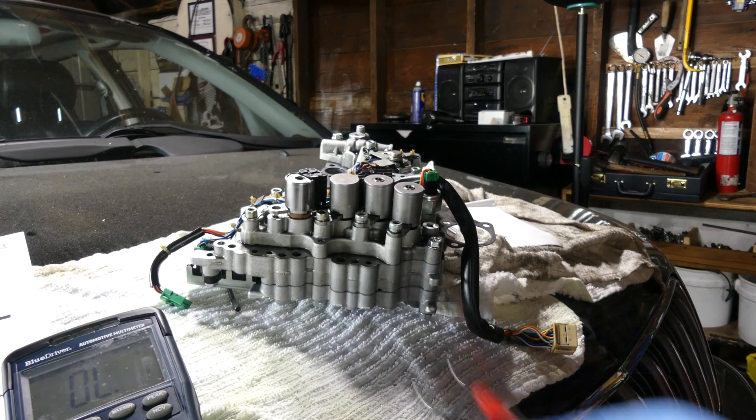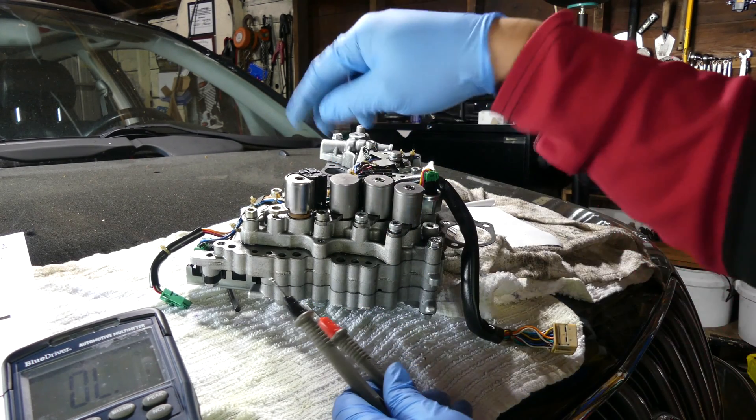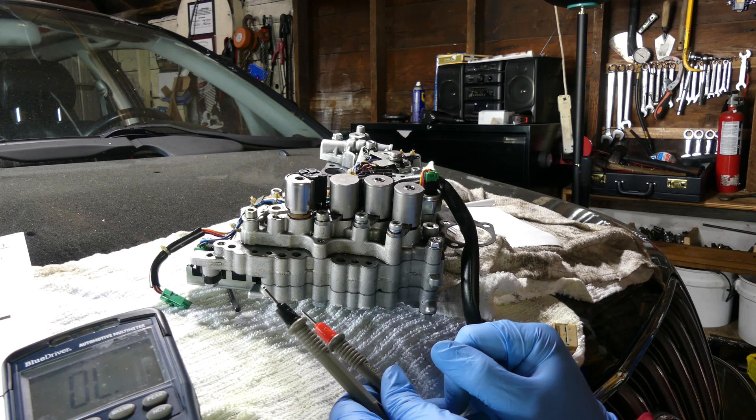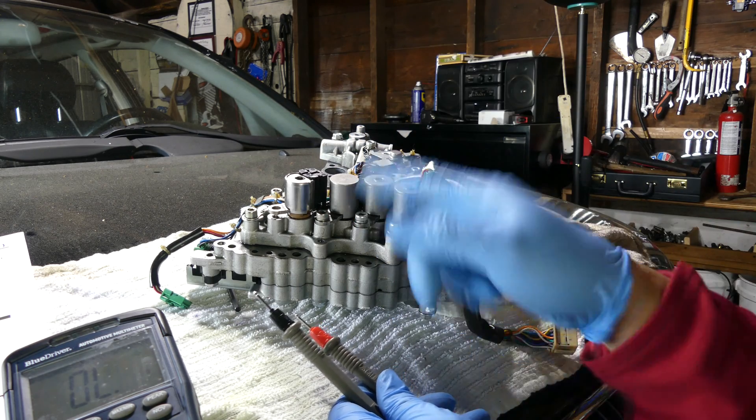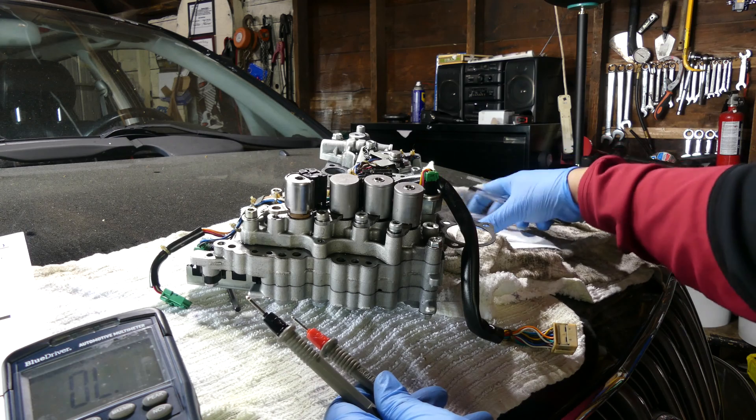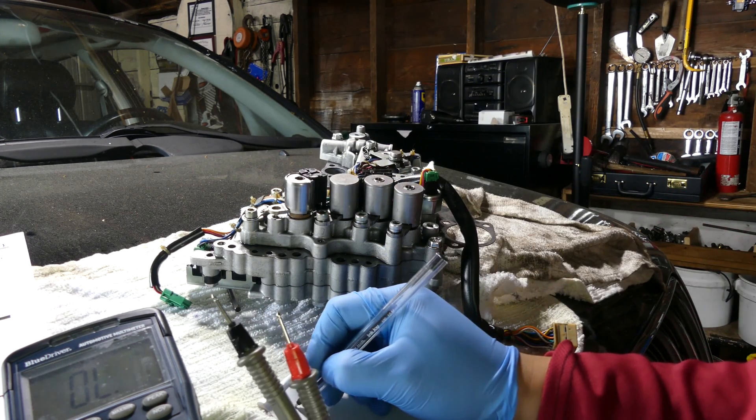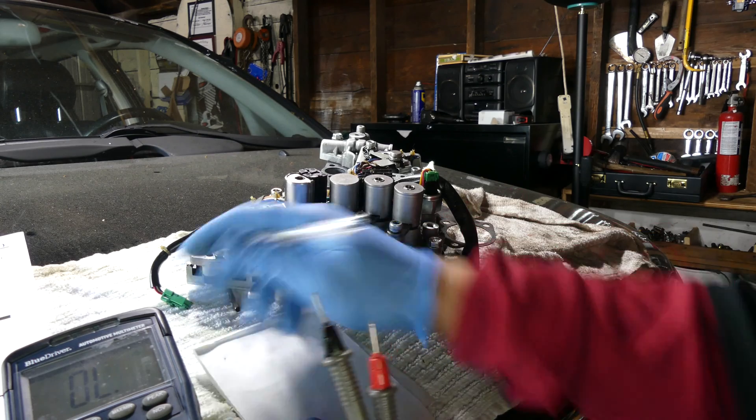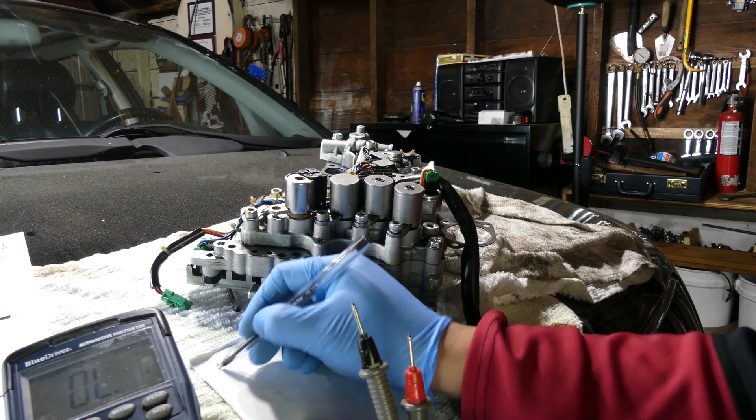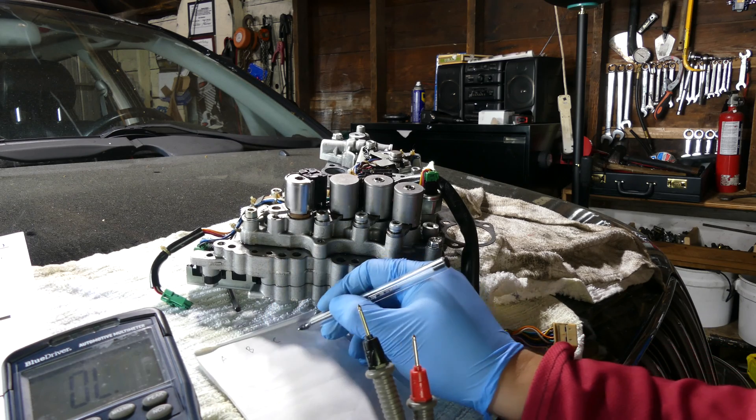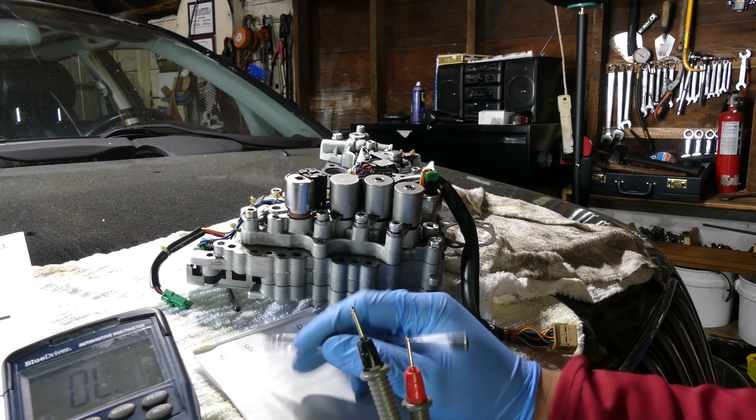But anyway, today we will just check the resistance of the solenoid and we will be putting it here. So let's put it like A, B, C and D. These are the solenoid A, B and C.